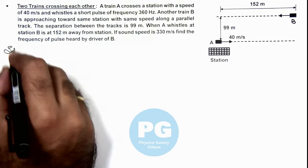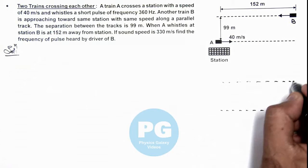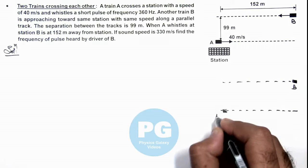Here we can first draw the situation at an instant when B will hear the pulse. If these are the two tracks I am redrawing, this is the initial position of B and this is the initial position of A when it was at the station.